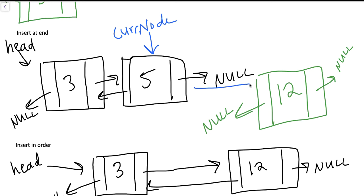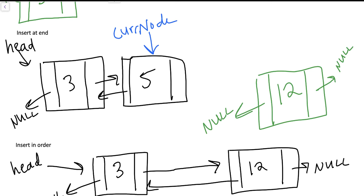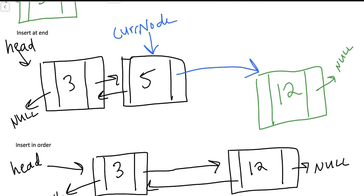Here's what we need to do: update cur node's next pointer so it points to new node. Then update new node's prev pointer to point to cur node. Now the list is intact — we can start at head and follow links all the way to the last node, and we can follow prev pointers all the way back to head.